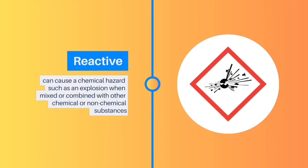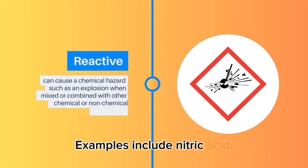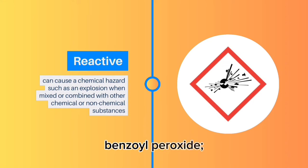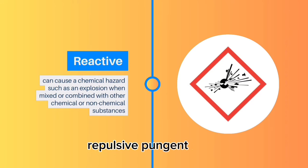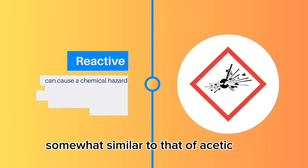Reactive: Chemical substances that cause a chemical hazard such as an explosion when mixed or combined with other chemical or non-chemical substances such as water or air. Examples include nitric acid, benzoyl peroxide, and silane. Silane is a colorless pyrophoric toxic gas with a sharp repulsive pungent smell, somewhat similar to that of acetic acid.